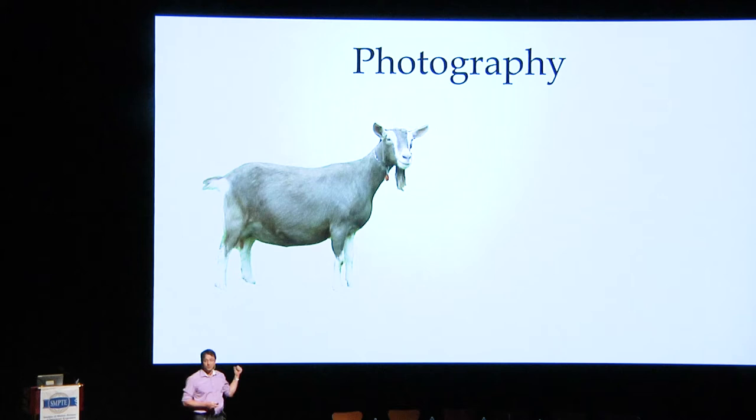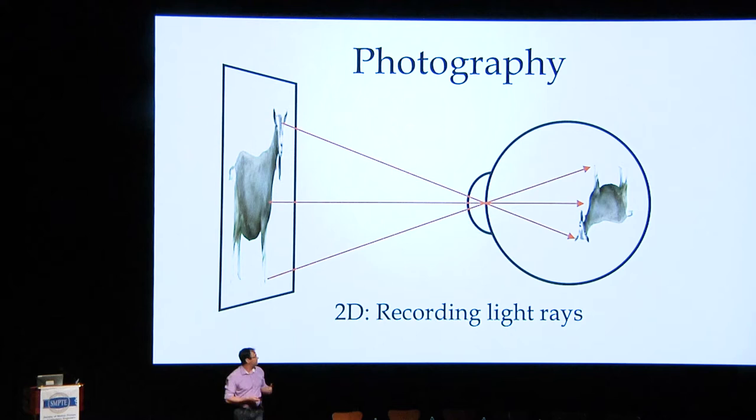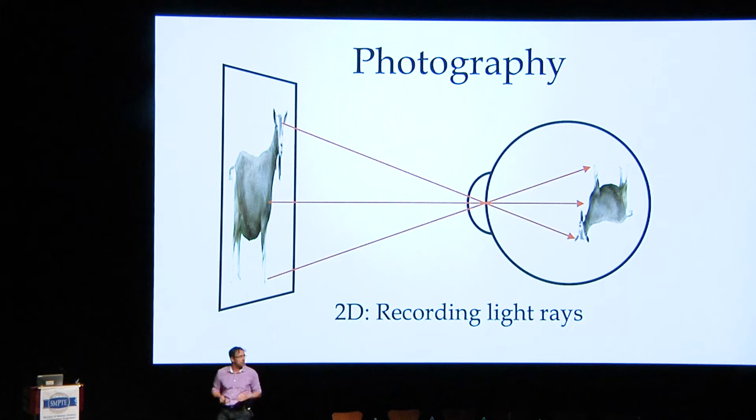In traditional 2D photography, we're basically just making a map of light rays. Every pixel in a 2D image represents a light ray seen by the camera — an analog for how our eyes would see an image. All the work that goes into 2D codecs is trying to take those 2D radiance maps and do things to them to make them compressible or easily viewed.